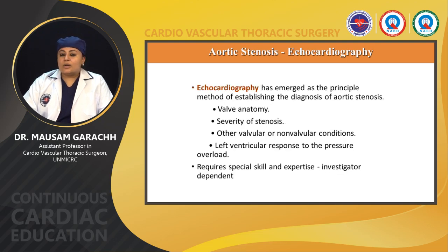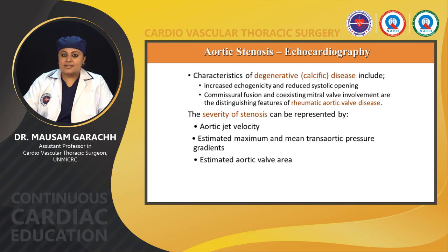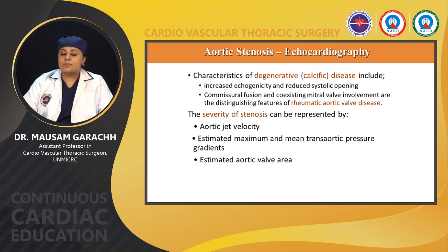Echocardiography has emerged as the principal method of establishing the diagnosis of aortic stenosis. We can analyze valve anatomy, severity of stenosis, other valvular or non-valvular conditions, and the LV response to pressure overload. Characteristics of degenerative calcific disease include increased echogenicity and reduced systolic opening. Commissural fusion and mitral valve involvement are distinguishing features of rheumatic aortic valve disease. Severity of stenosis is represented by aortic jet velocity, estimated maximum and mean transaortic pressure gradients, and estimated valve area.